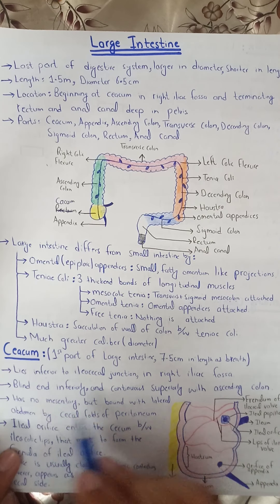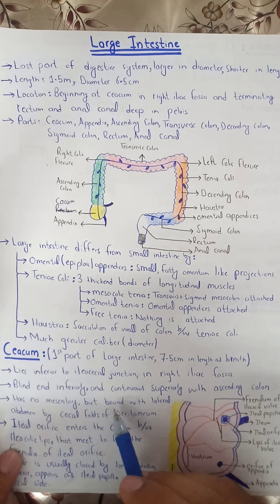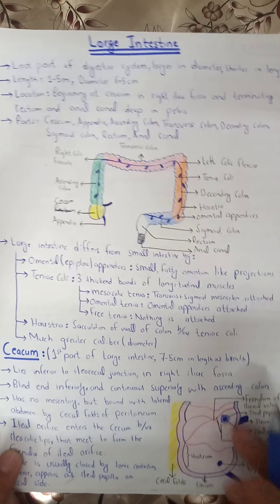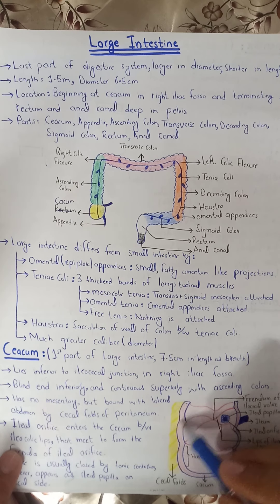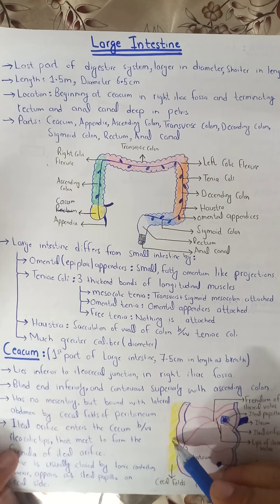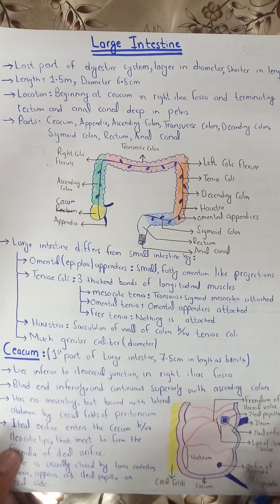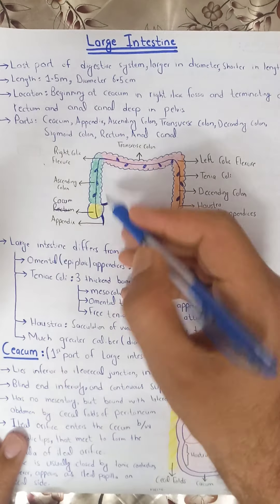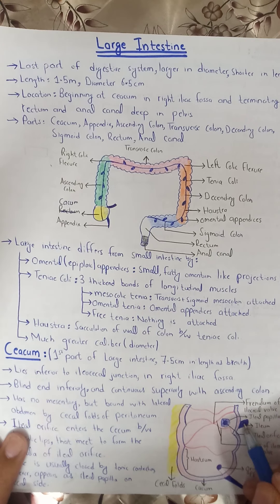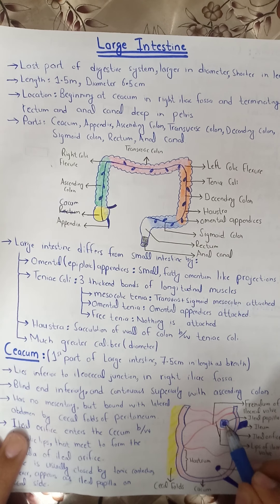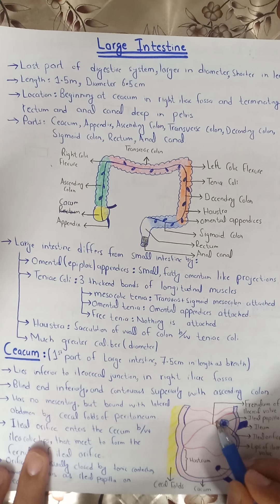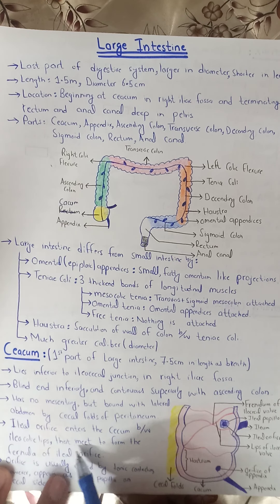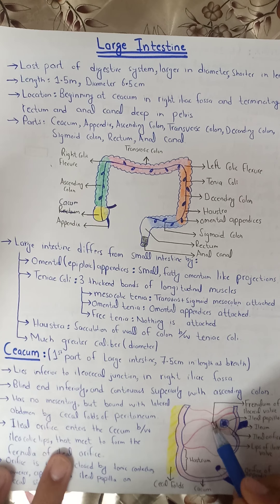The cecum has no mesentery — it is retroperitoneal — but is bound to the lateral abdominal wall by cecal folds of the peritoneum. The peritoneal folds are attached to the cecum. The ileal orifice is where the ileum opens into the cecum. This is the ileal orifice with the ileocolic lips — superior and inferior — which form the frenula of the ileocecal valve.